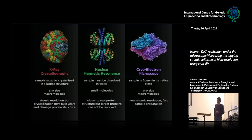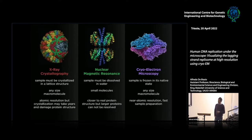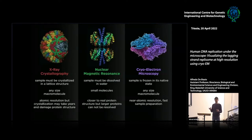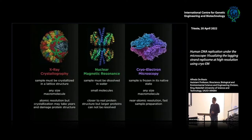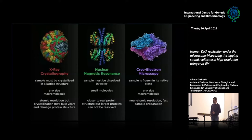The samples used in Cryoelectron microscopy can be in a nearly native state, which is an advantage compared to X-ray crystallography, where the sample has to be crystallized in a lattice structure. The molecular size of the object investigated by CryoEM can be any size. Most importantly, the resolution that can be attained is in the near-atomic range. Also, sample preparation for CryoEM is faster compared to the sister techniques.